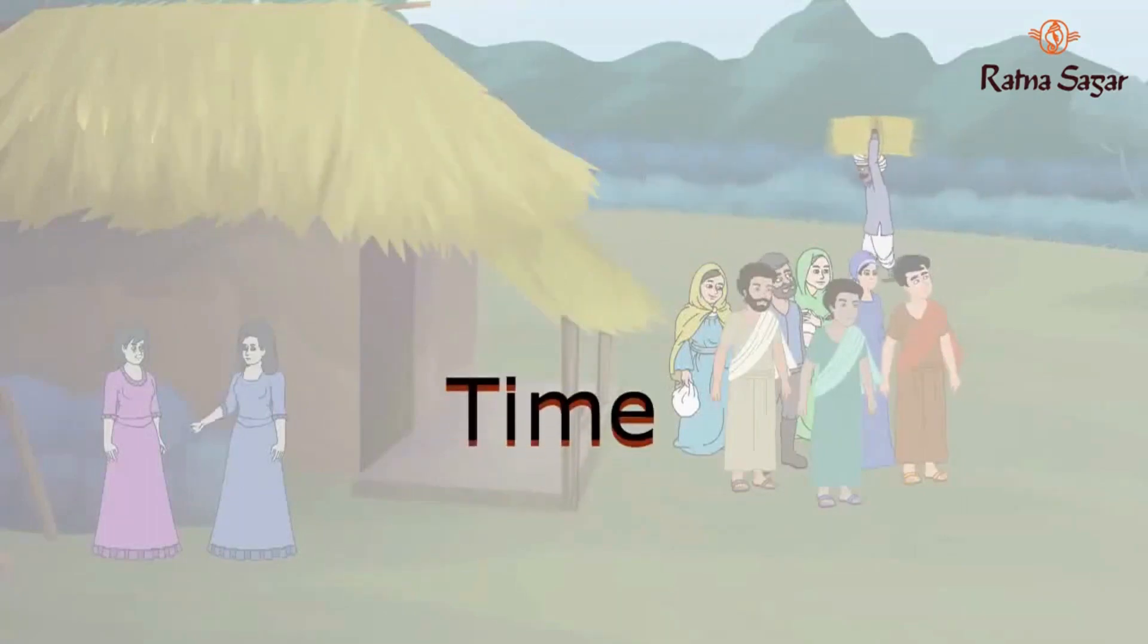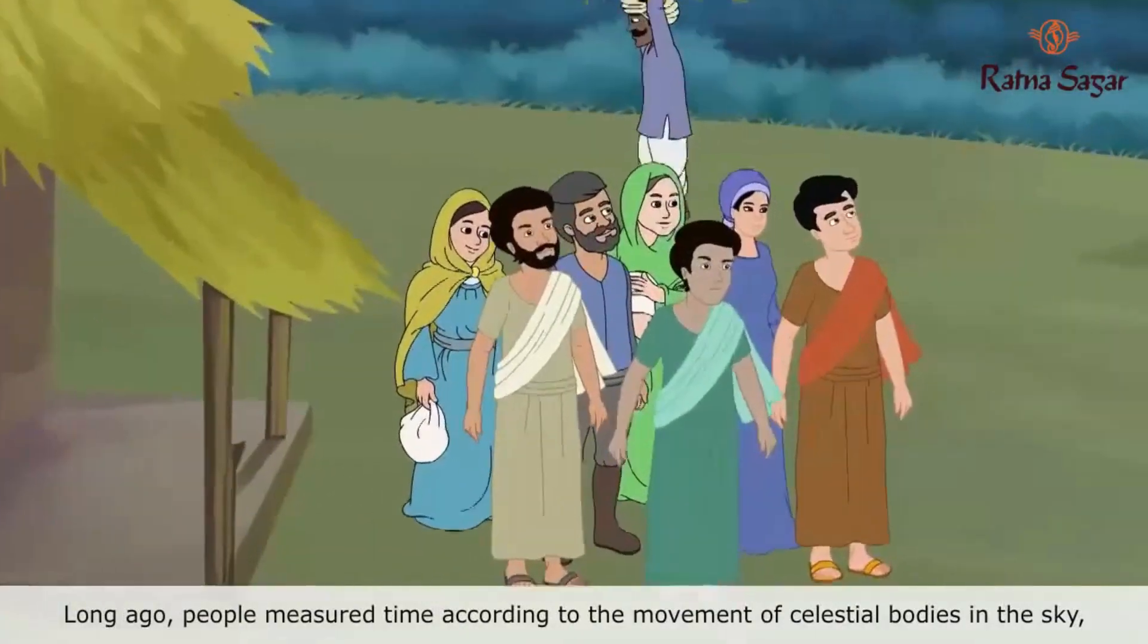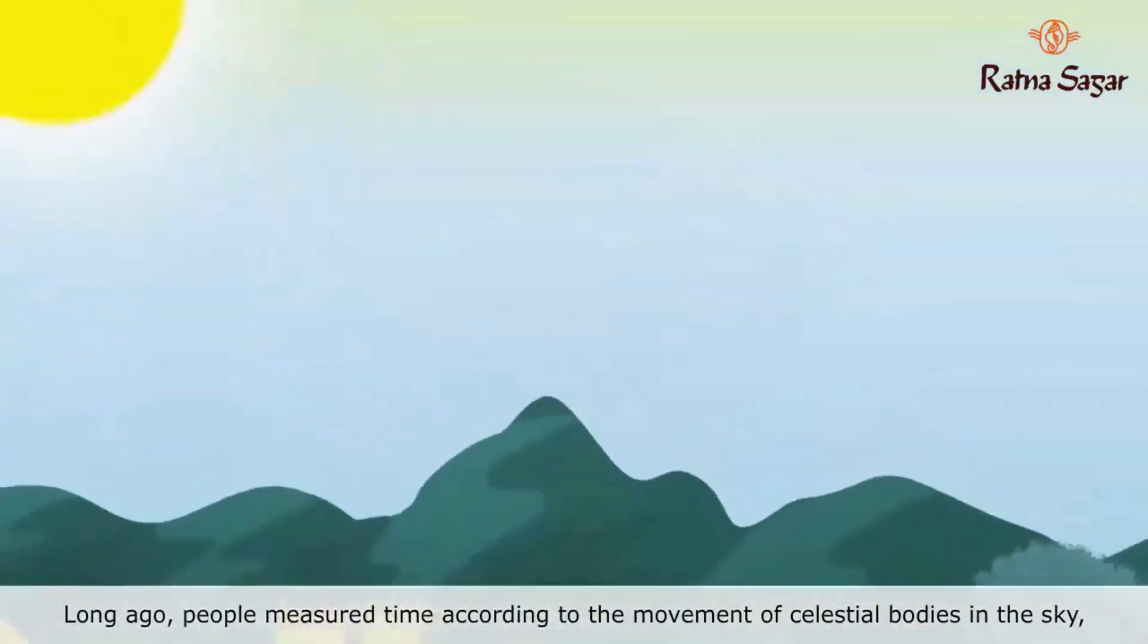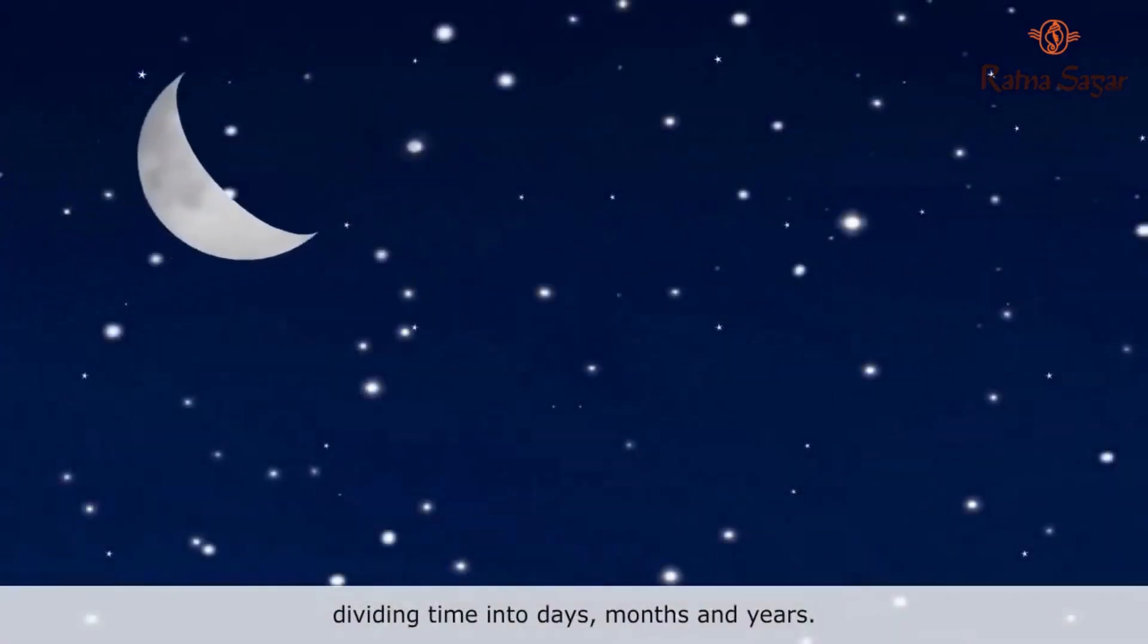Periodic motion and time. Long ago, people measured time according to the movement of celestial bodies in the sky, dividing time into days, months and years.